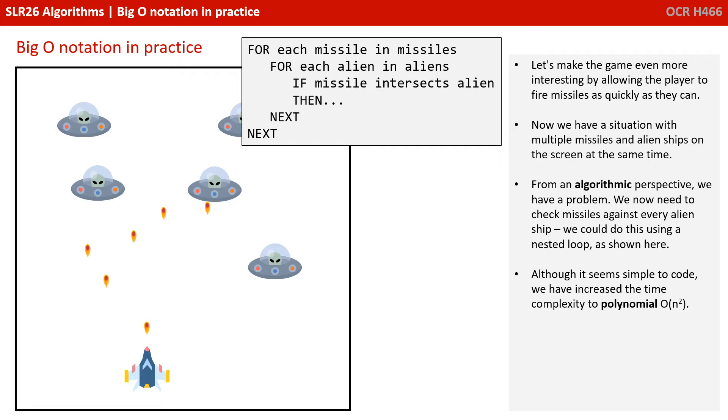Let's make the game even more interesting by allowing the player to fire missiles as quickly as they can. Now we have a situation with multiple missiles and alien ships on the screen at the same time. From an algorithmic perspective, we have a problem. We now need to check missiles against every alien ship, and we could do this using a nested loop, as shown here.